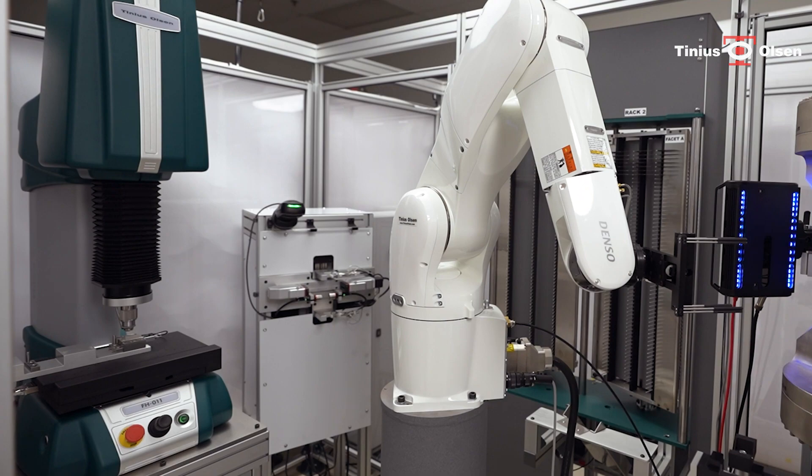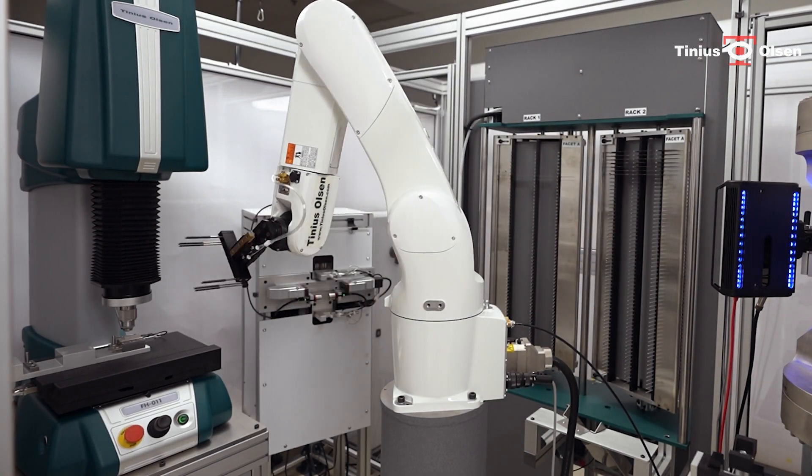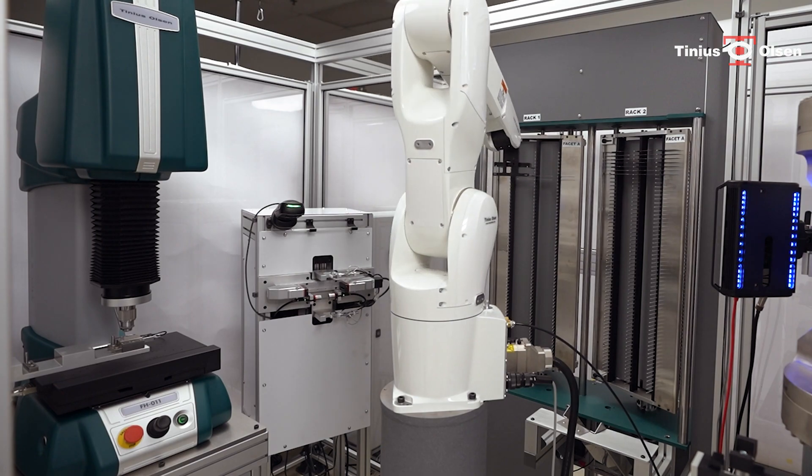Even before the entire test cycle is complete, the six-axis robotic arm will begin processing another specimen for the next test, ensuring continuous efficiency and repeatability.